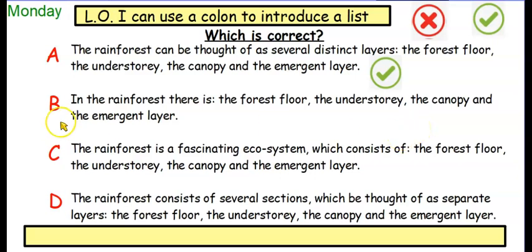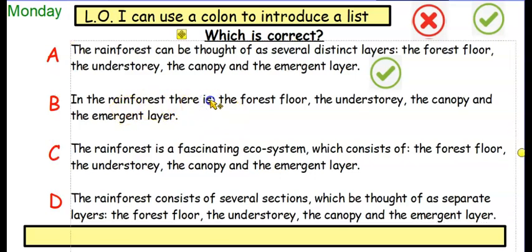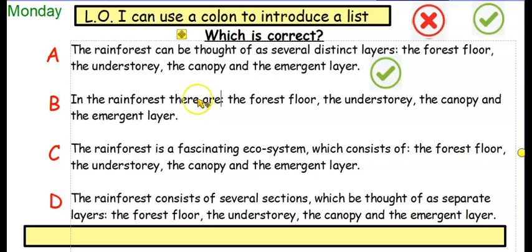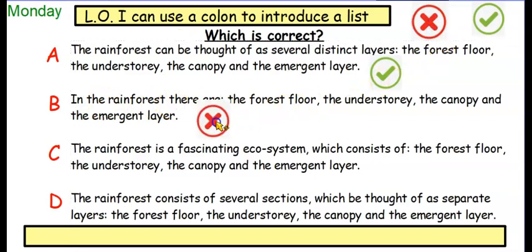Let's have a look at the next one. In the rainforest, there is the forest floor, the understory, the canopy and the emergent layer. Well, it probably should say 'there are' rather than 'there is' — grammatically there's more than one. But would we have a colon here? This bit doesn't make sense on its own, so I'm going with a no — this one is not correct. Let's have a look at C. The rainforest is a fascinating ecosystem which consists of: the forest floor, the understory, the canopy and the emergent layer. Does 'the rainforest is a fascinating ecosystem which consists of' make sense on its own? No, it doesn't — that one is not correct.